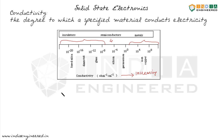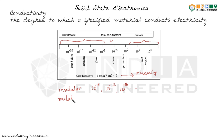Looking at the range of values: insulators have conductivity around 10 to the power of minus 8 and decreasing, that is 10 to the minus 8, 10 to the minus 12, 10 to the minus 16 and so on. Metals have high conductivity of the order of 10 to the power 3, 10 to the power 4 and increasing. Semiconductors have conductivity in between these two.